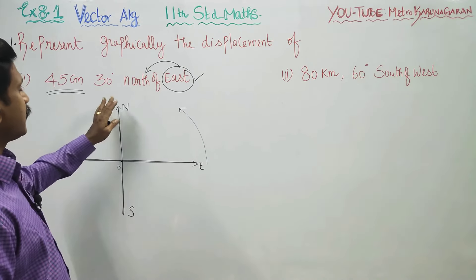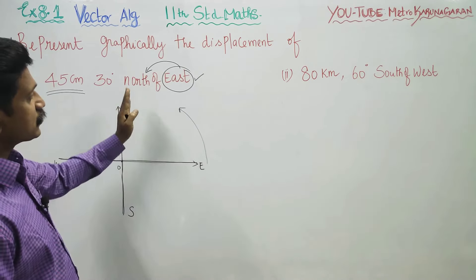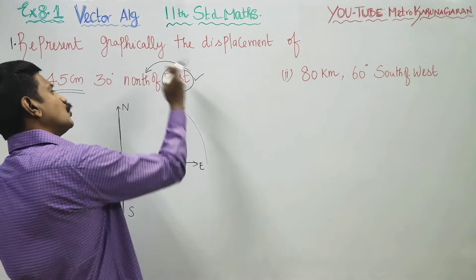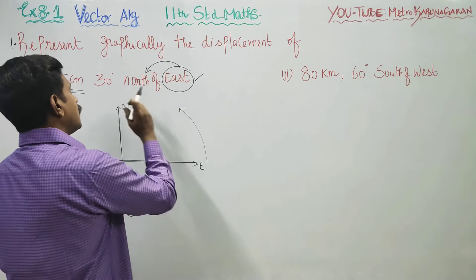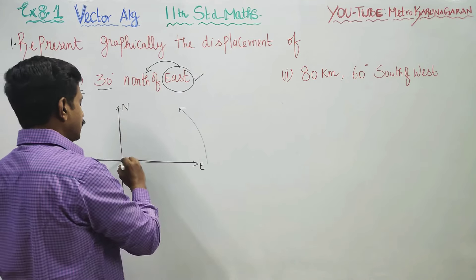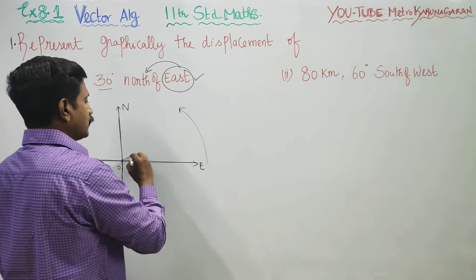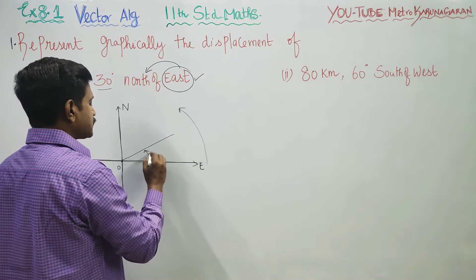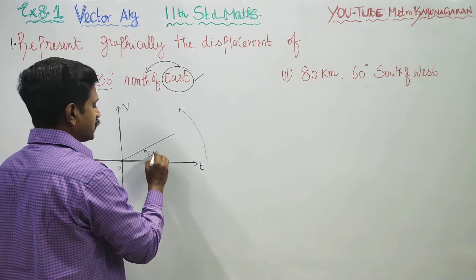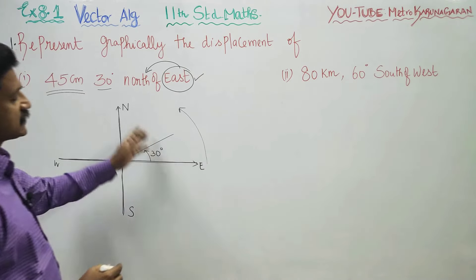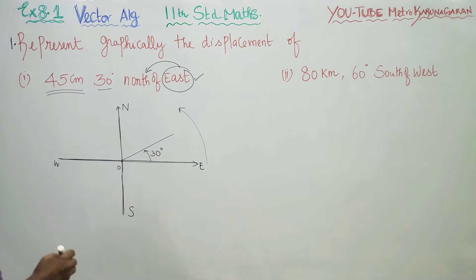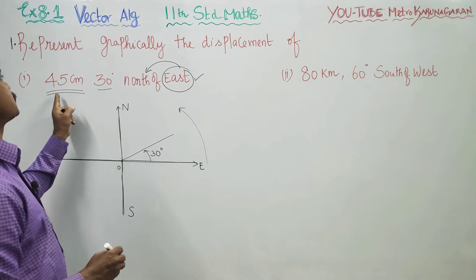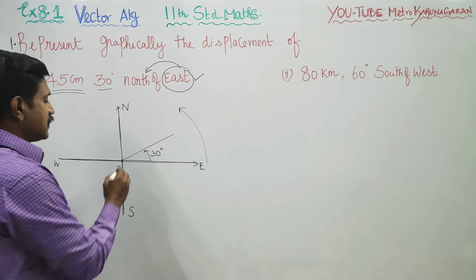30 degrees north of east means start from east and go towards north. How much degree? 30 degrees. Therefore, you have to move 30 degrees in this direction — 30 degrees in this direction.